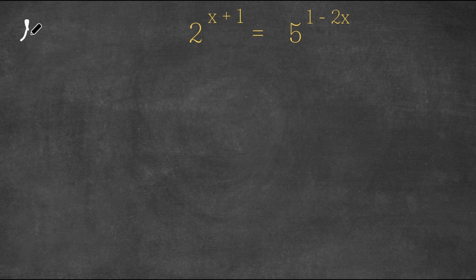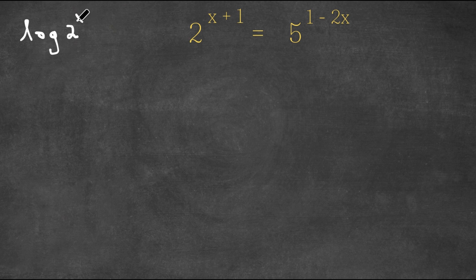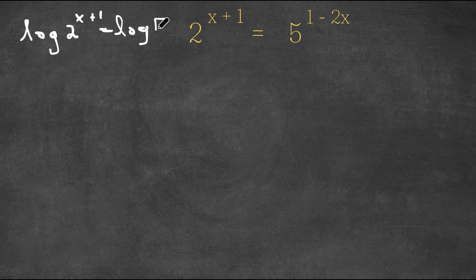Now what I'm first going to do is I'm going to take the log of both sides. So now I have log 2 to the power of x plus 1 is equal to log 5 to the power of 1 minus 2x.